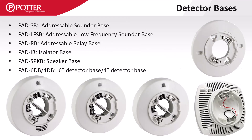POTR offers several different detector bases, including an addressable sounder base, an addressable low frequency sounder base, an addressable relay base, an isolator base, a speaker base, and a standard 4 or 6 inch base.